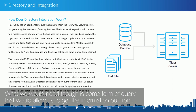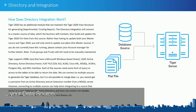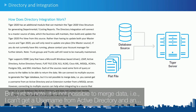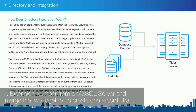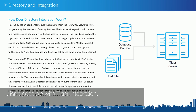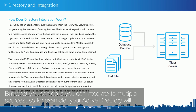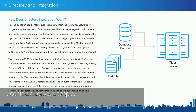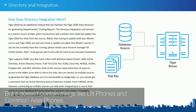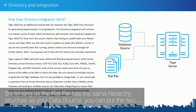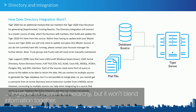What we would need is some form of query that would allow us to get the information out from your data source. It's not possible to merge data — for example, I can't get a username from Active Directory and an extension number from MS SQL Server and merge the two together to create one record. However, you can integrate to multiple sources. For example, your Active Directory will contain all your people, but it doesn't contain things like lift phones and common area phones. As long as the flat file has the same hierarchy structure as your data source, you can put the two together to create the hierarchy.